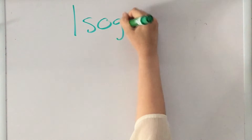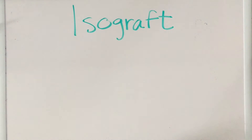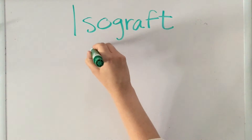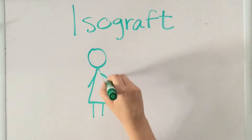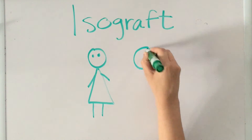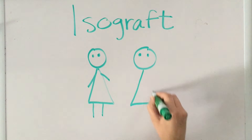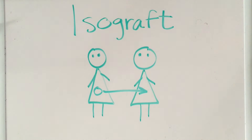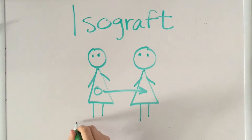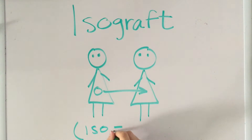The second type of transplant is called an isograft. An isograft is when tissue is transplanted from one identical twin to the other. This is also never rejected because the DNA is the same.